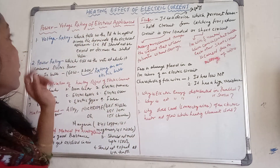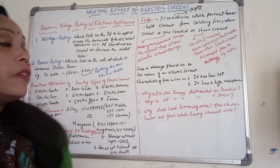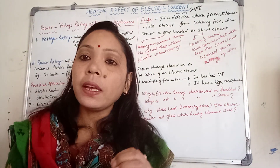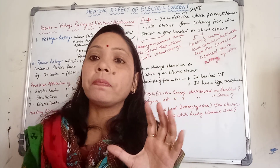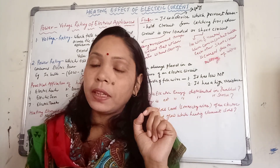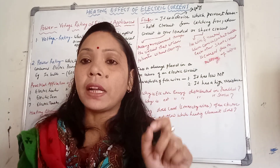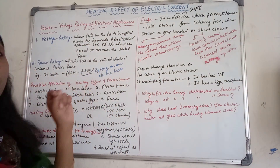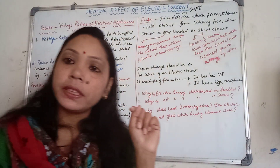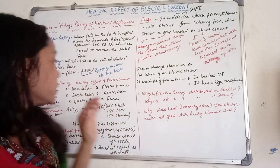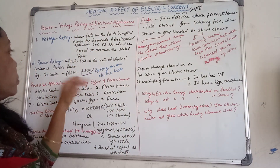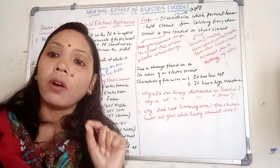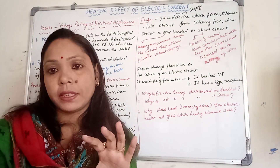Let's start with the power voltage rating of electrical appliances. If you see an electric bulb, it always has a written rating like this: 60 watt, 220 volt. So 60 watt and 220 volt is actually the rating of electrical appliances.